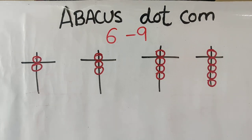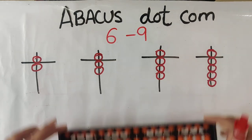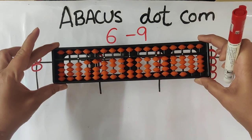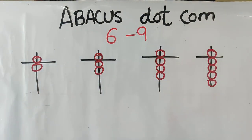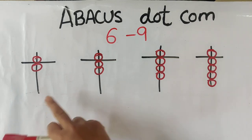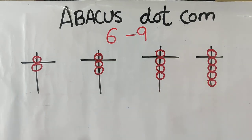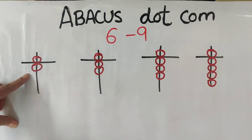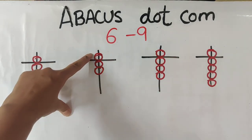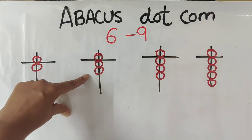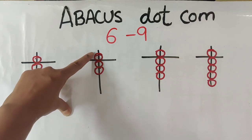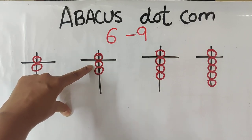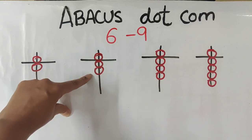In my last video, I showed you the 6 to 9 values on the abacus. Now, I will show you on this image. So, this is 5 and 1 — 6. 5 and 2 — 7. Let's count it: 5, 6, 7.